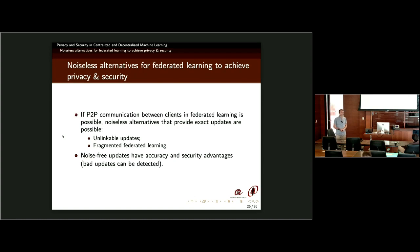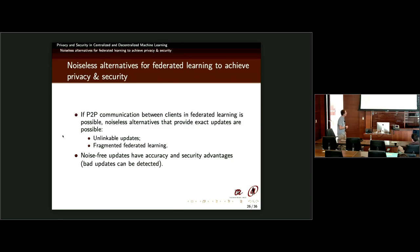Is adding noise the only way to protect privacy in machine learning? The answer is no. We can use noiseless alternatives, which has advantages. The assumption required is that peer-to-peer communication between clients is possible. If this is possible, a range of new techniques become feasible. The basic advantage of avoiding noise addition is that the model manager still sees the original updates as they were computed by the participants — and this allows protecting against security attacks, which require seeing the real updates, not noise-added ones.